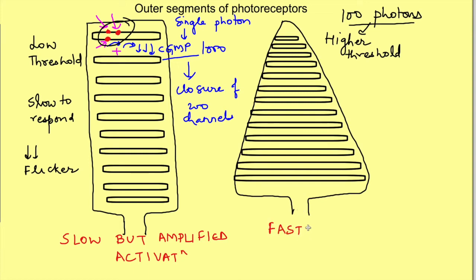But cones on the other hand are quick to respond. So they can't sum up the responses and that is why they are good at detecting the flicker. This we also call as cones having a better temporal resolution. That is, they are better at detecting quick successive light signals separately.